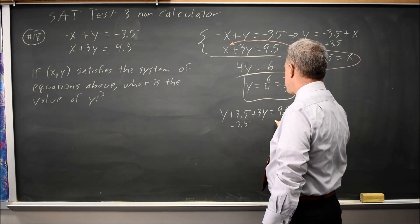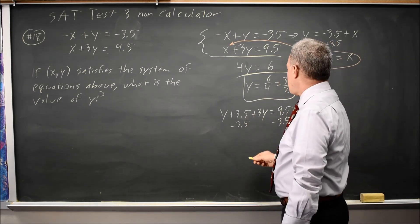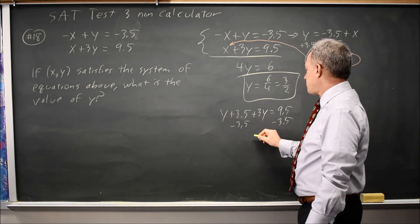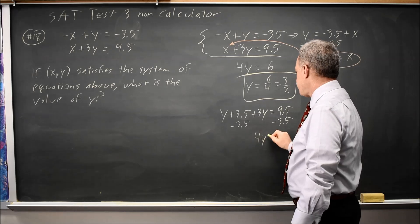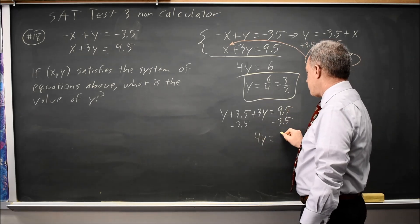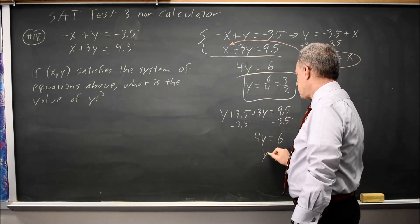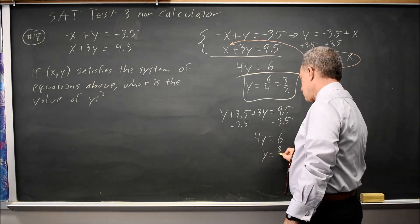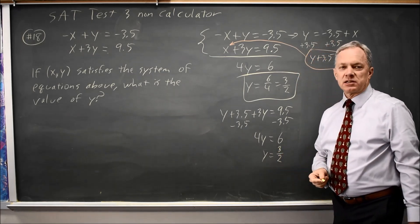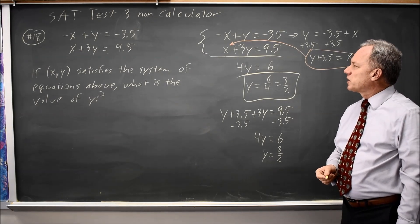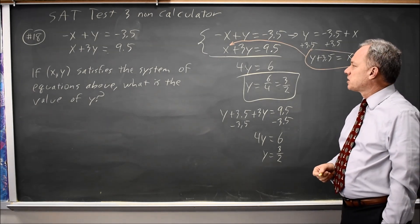Subtract 3.5 from both sides, and the left-hand side, y plus 3y is 4y. 9.5 minus 3.5 is again 6. And this is essentially the same as the method of eliminating variables if I substitute.